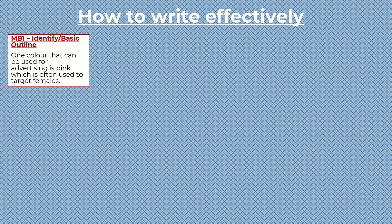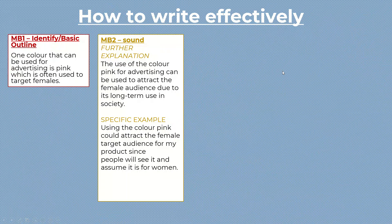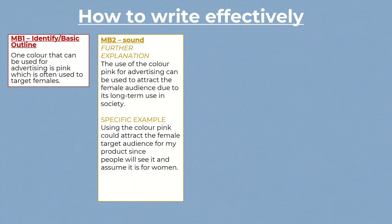To get the middle mark band, it usually says 'a sound or adequate explanation.' To do that, I usually say try to form two strong sentences to make your point. First, the same point as before but with added explanation: 'The use of the color pink for advertising can be used to attract the female audience due to its long-term use in society.' Then a specific example: 'Using the color pink could attract the female target audience for my product, since people will see it and assume it is for women.'